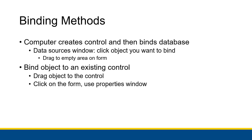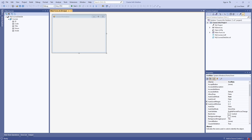There are two methods of binding in Visual Studio. The first is where the computer creates the control, binds the database to it, and you just move that control onto your form — in the Data Sources window you click the object and drag it to an empty area on the form. The second is binding an object to an existing control by dragging the object to a control already on your form, or clicking the form and using the Properties window to bind the object to that control.